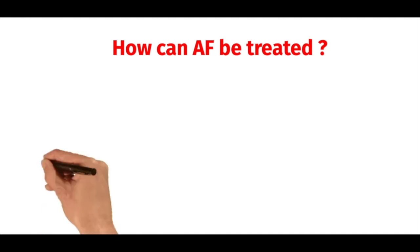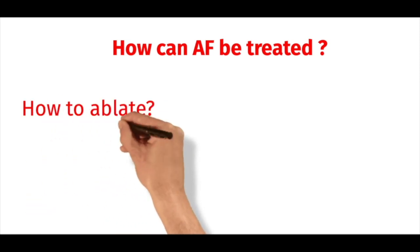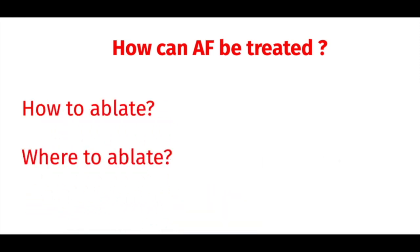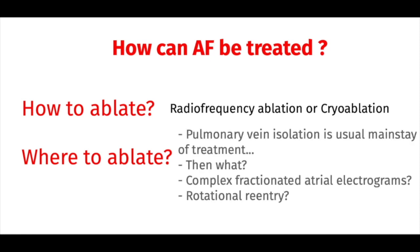AF can be treated by rate control or antiarrhythmics, but these drugs can have limited efficacy and can also be more proarrhythmic. Other possible therapies include cardiac ablation, which is an invasive procedure involving insertion of catheters into the heart and using these catheters to burn or freeze tissue that causes the arrhythmias. The current standard of care is to use radiofrequency or cryoablation to isolate the pulmonary veins that drain into the left atrium.